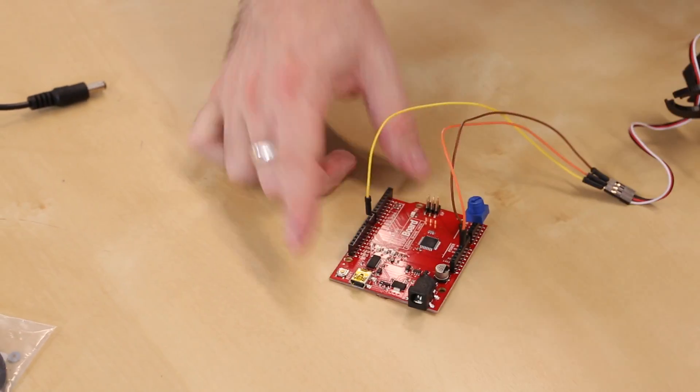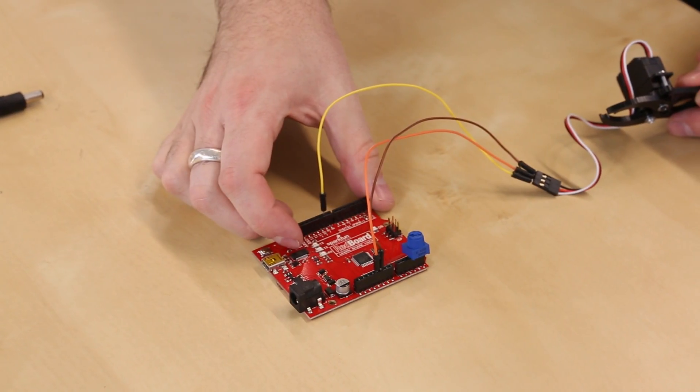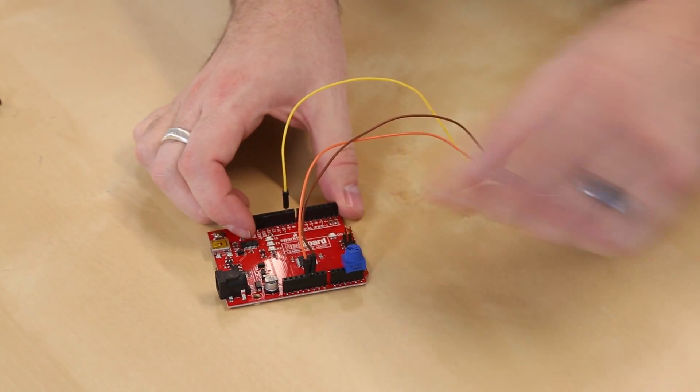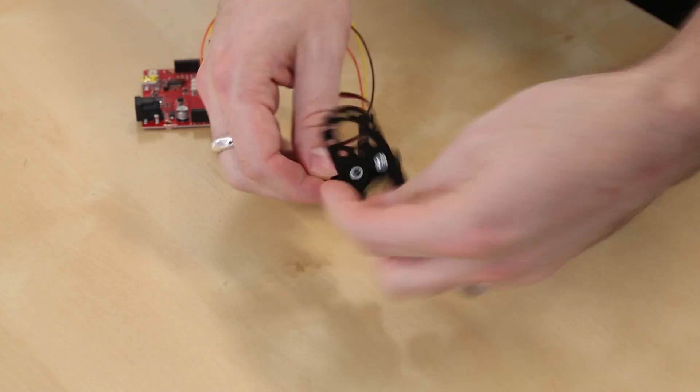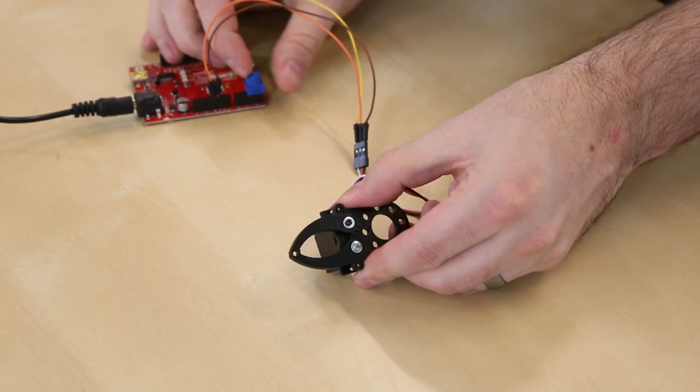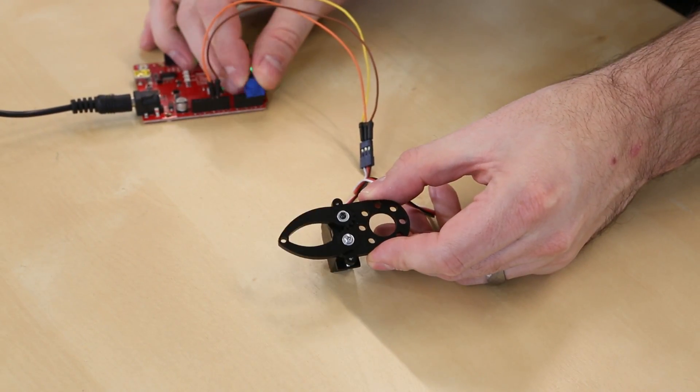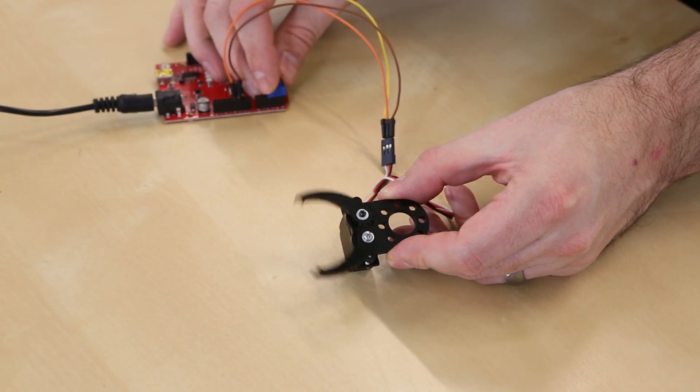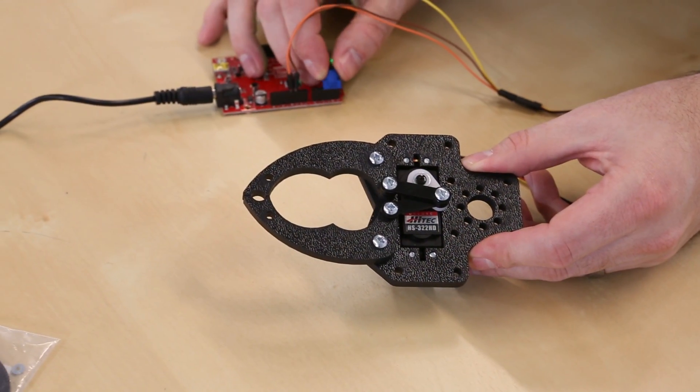For this demo we're just using one of the SparkFun red boards and we've just got a pot plugged in just to do the sweep command on the servo, so they're pretty easy to use. Just plug this in and there's the gripper. Works pretty well, and here is the larger one.